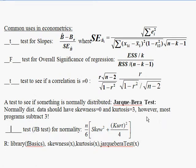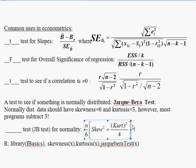Most statistics programs — including R and Excel — subtract three from kurtosis, so the number you're looking for should be zero in those programs. If that's what you're looking for in a normal distribution — no skewness and no kurtosis — then the Jarque-Bera test looks at skewness squared added to kurtosis squared, with some corrections: you divide by four and multiply by n over six.